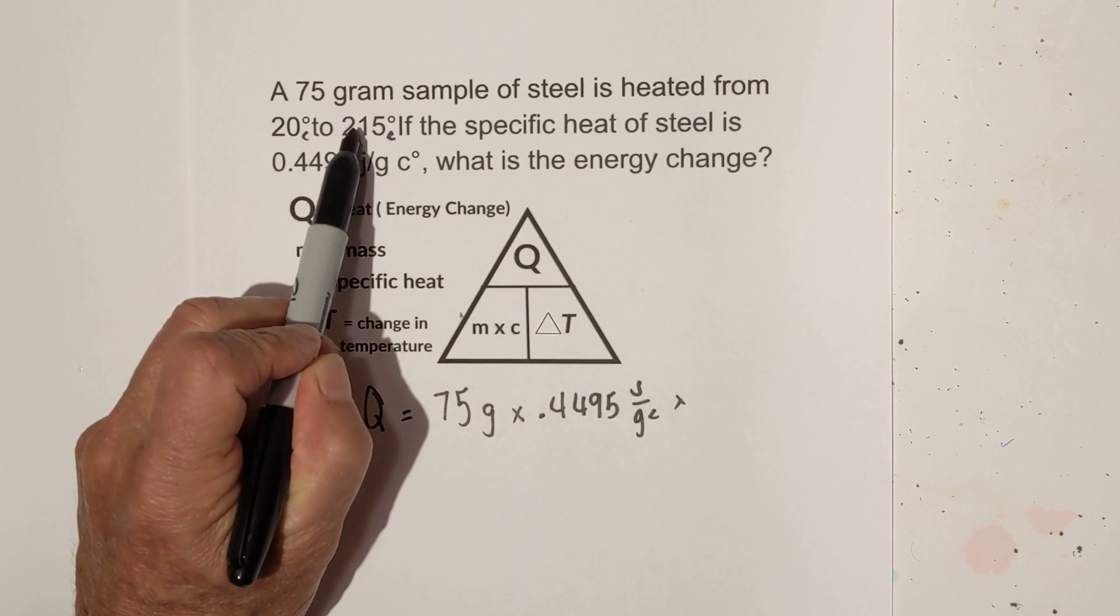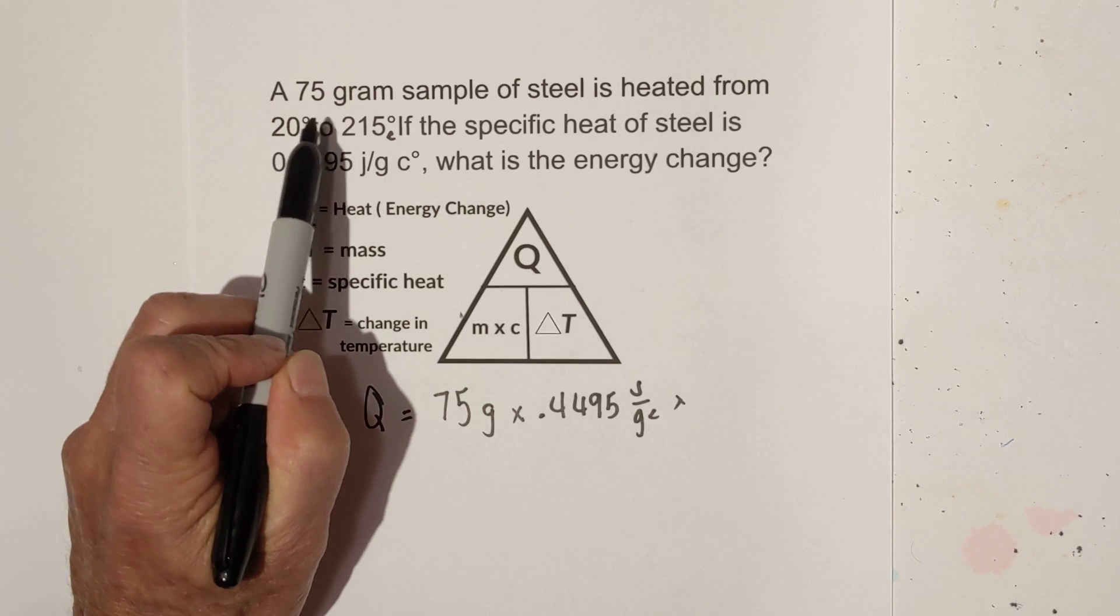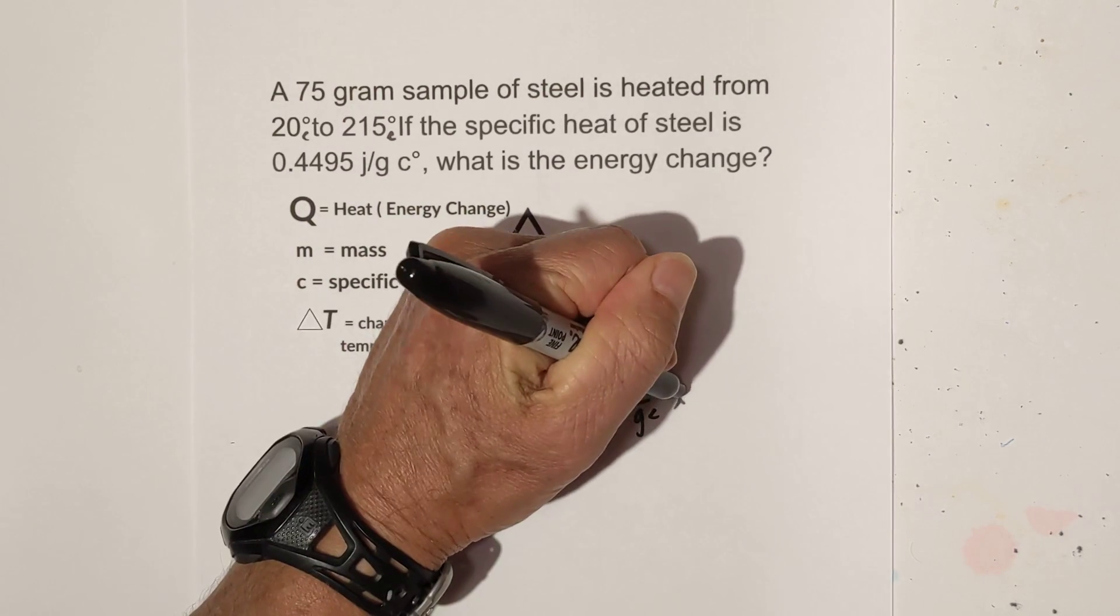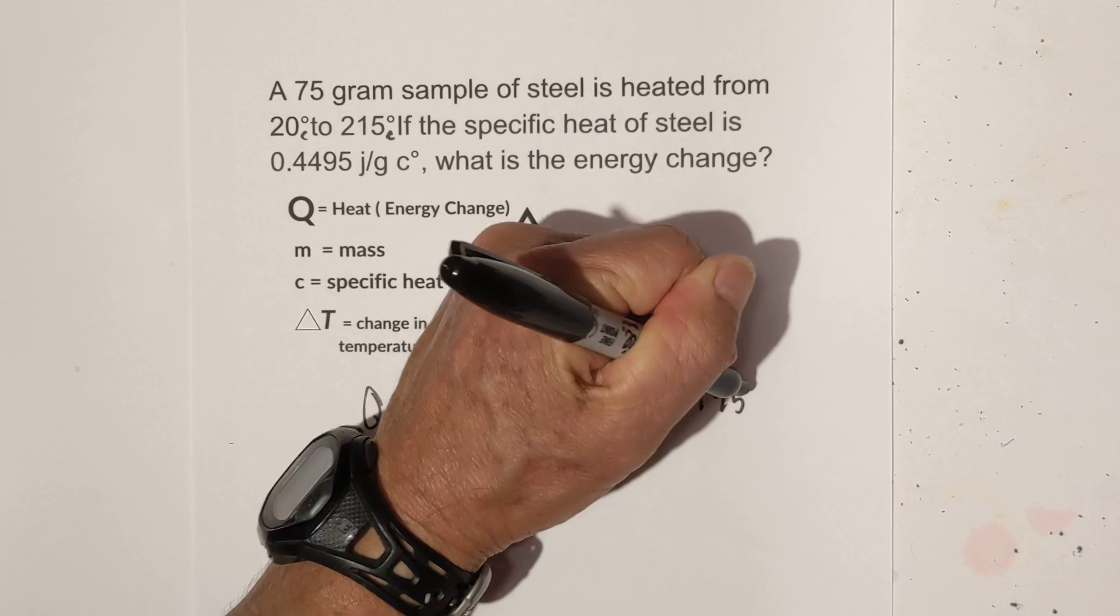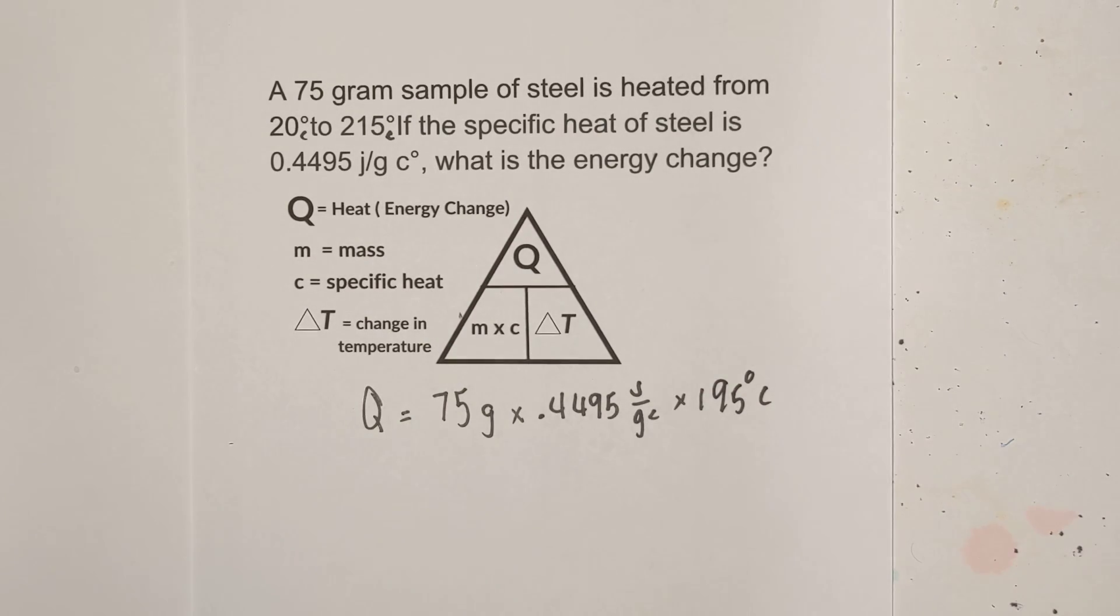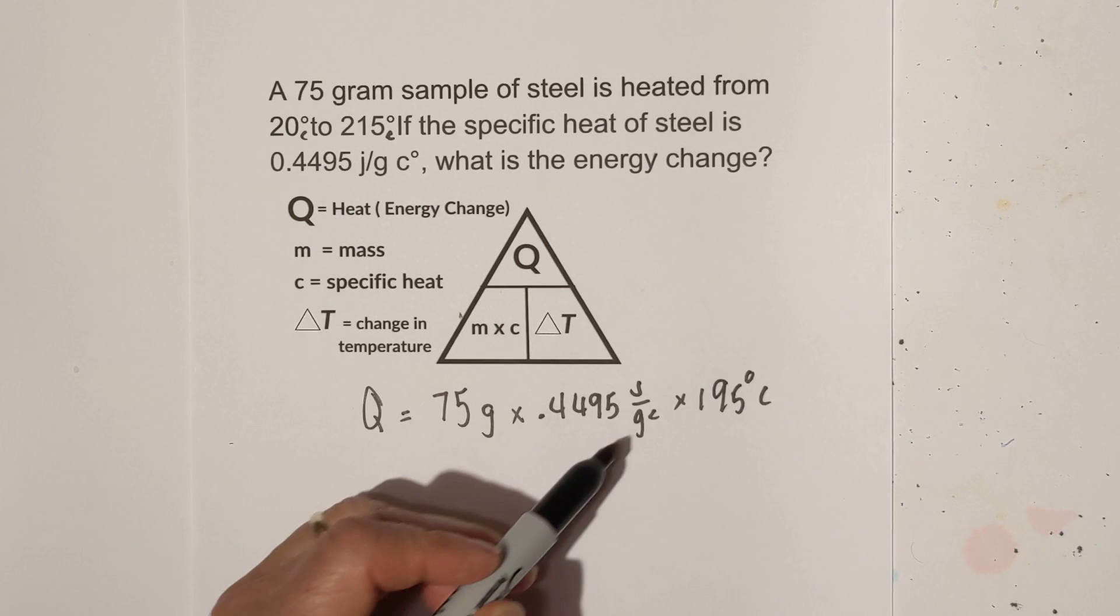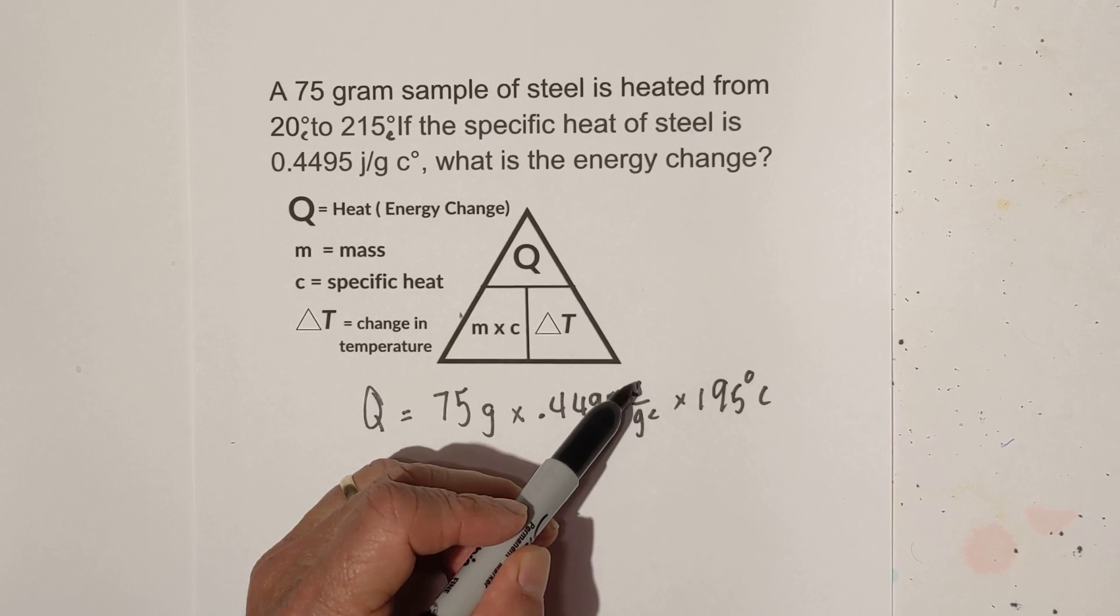So it goes from 20 to 215 and I know that's a change of 195 degrees Celsius. So now we're just ready to multiply but we need to cancel units because remember joules is on top.